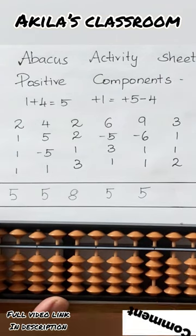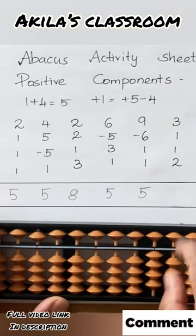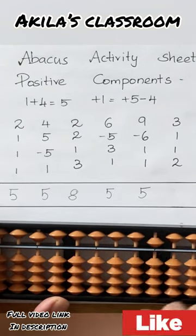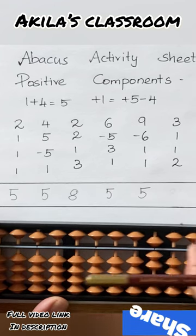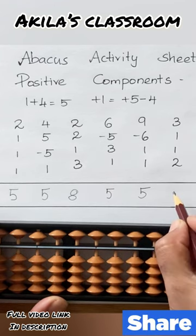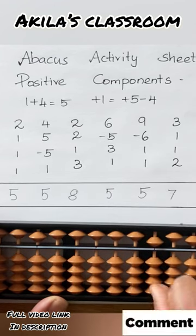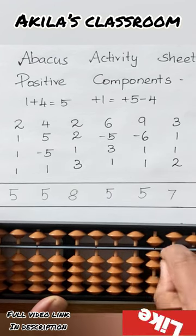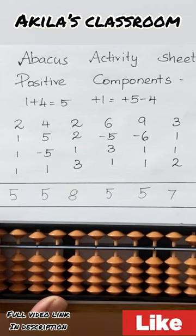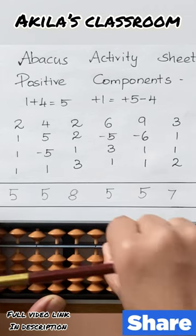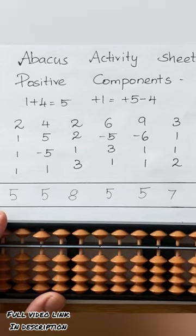3 plus 1 plus 1 plus 2. Answer: 7. 5 plus 2 minus 7 plus 1. Answer: 5.